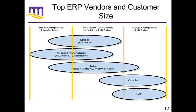Where do these fit in? Microsoft Dynamics generally focuses on the lower end, trying to transition people from using Office documents like Excel and Word into much larger systems as they continue to grow. Epicor and Infor tend to hit more of the mid-sized companies. And then Oracle and SAP are at the high-end big systems.